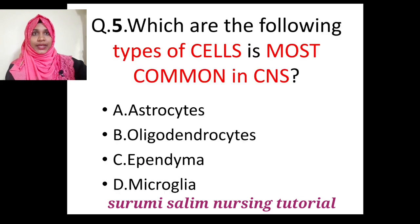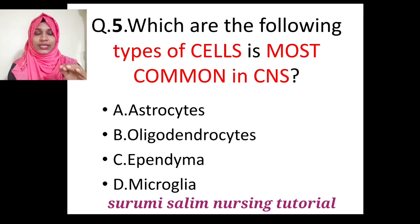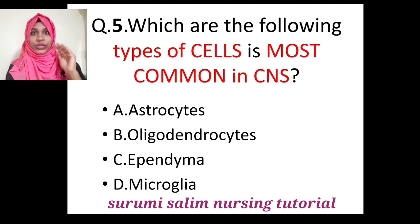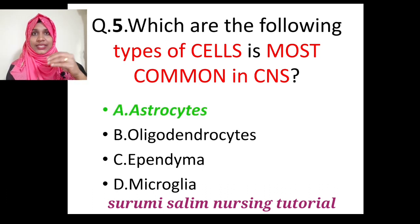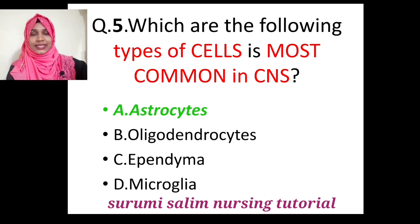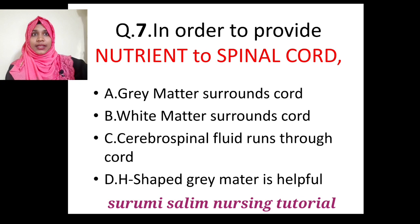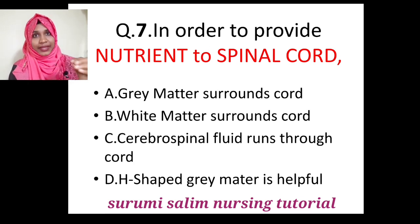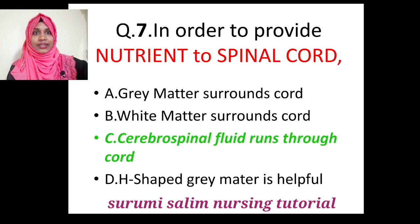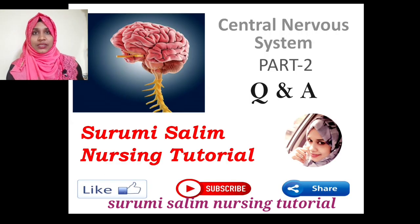Question 5: The most commonly seen cells in the central nervous system are glial (neuroglial) cells; among these, the most common are astrocytes, which have the ability for general conduction of electrical impulses. Question 6: Myelin sheath of axon is secreted by Schwann cells. Question 7: Nutrients to the spinal cord and brain are provided by cerebrospinal fluid (CSF).